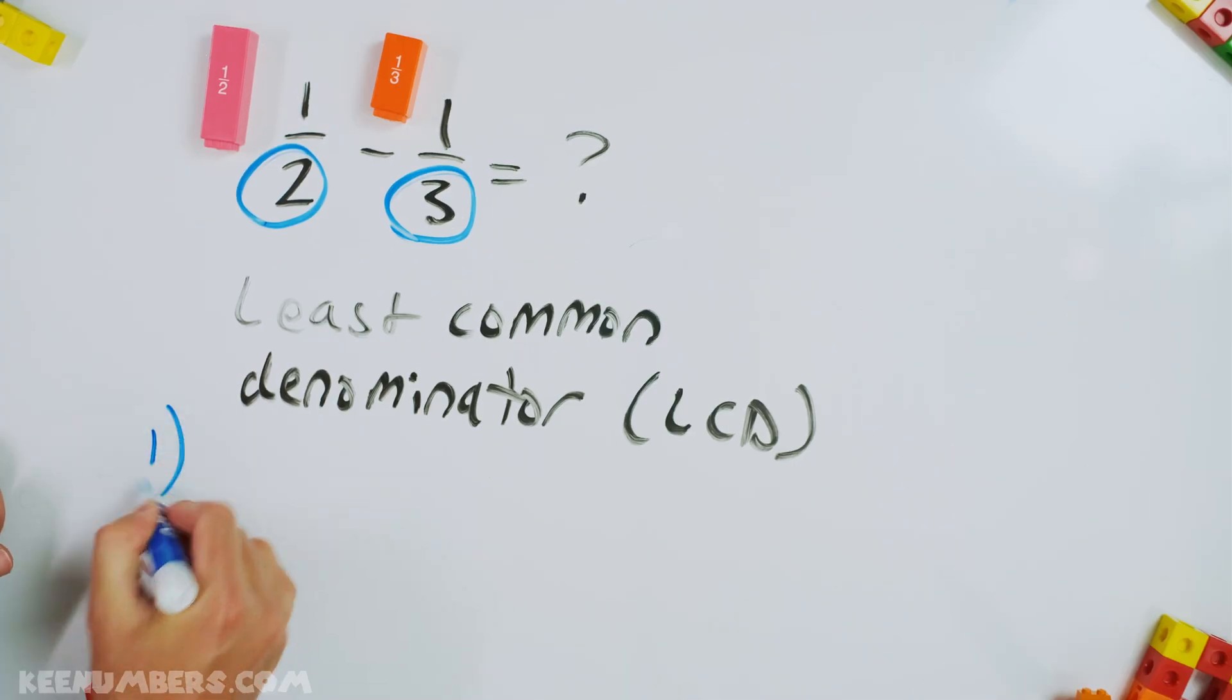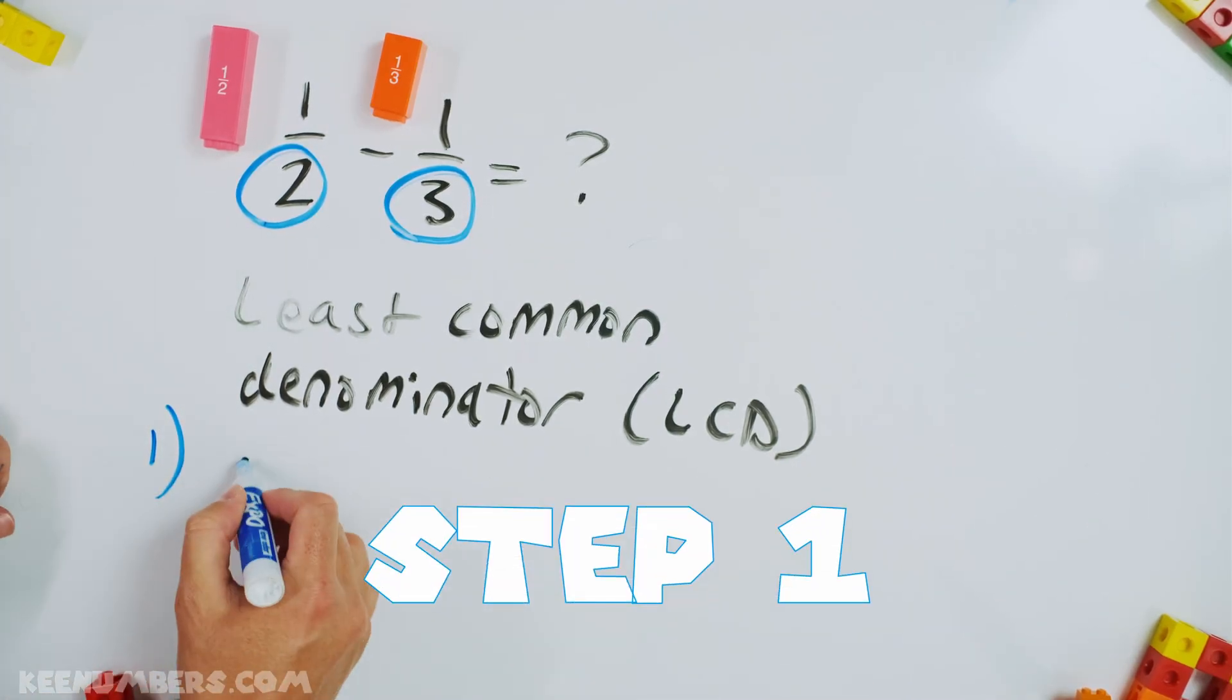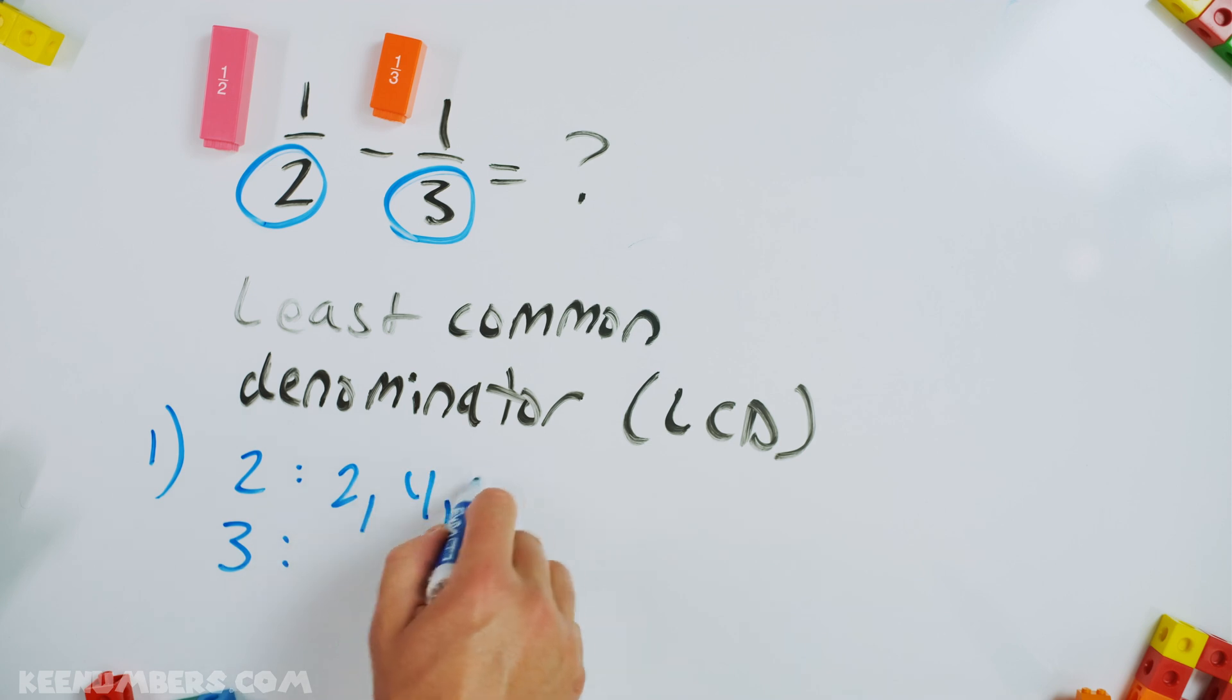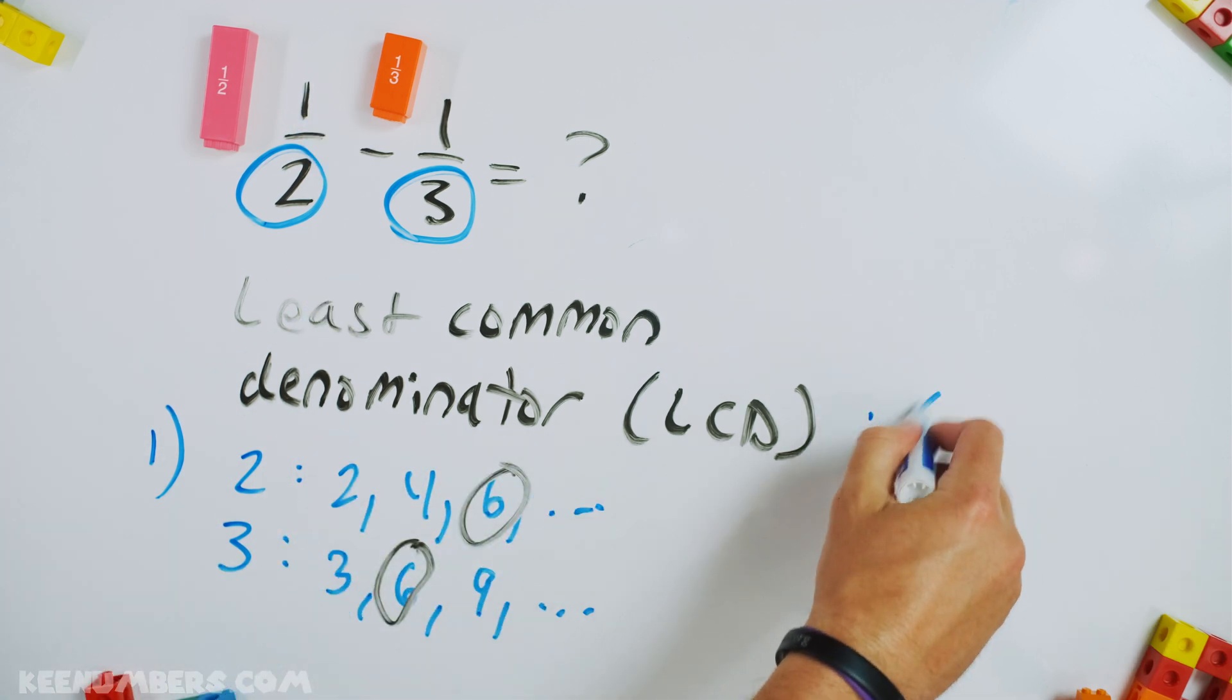Step one, you look for multiples of two. Multiples of two: two, four, six, so on and so forth. Multiples of three: three, six. Oh, look at that. Hezzy was correct. The smallest number that's in both lists. It's six, and so you convert these two fractions into sixths.